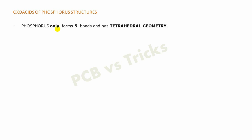The first point says that phosphorus only forms five bonds and has a tetrahedral geometry. That means phosphorus will form bonds with four atoms. One bond will be a double bond and the other three bonds will be single bonds. In this way, phosphorus forms a tetrahedral geometry.